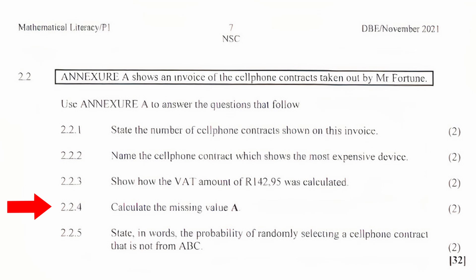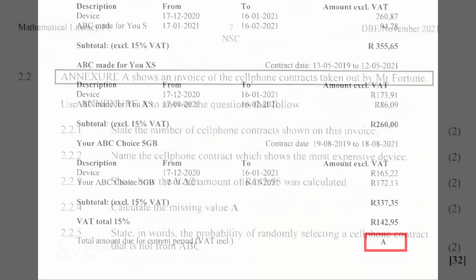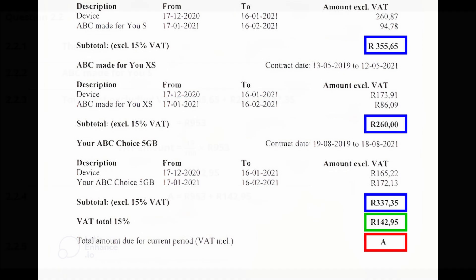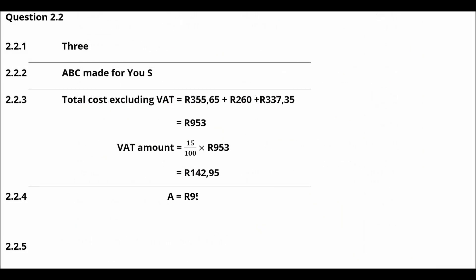Question 2.2.4: Calculate the missing value of A. From Annexure A, A is the total amount due for the current period, VAT inclusive. The value of A equals the sum of the subtotals excluding VAT plus the VAT amount. A equals R953 plus R142.95, which gives us a value of R1,095.95.